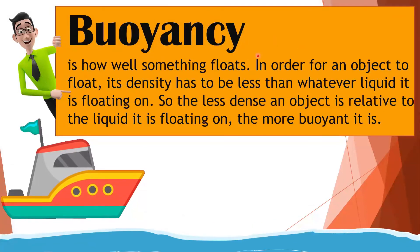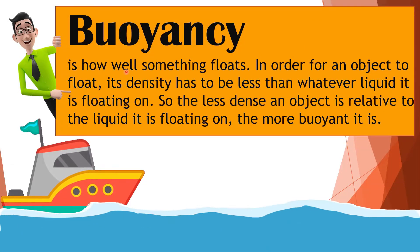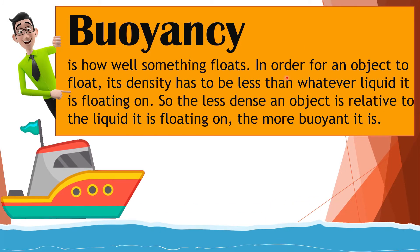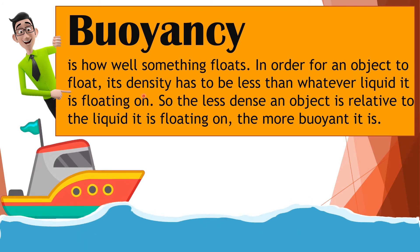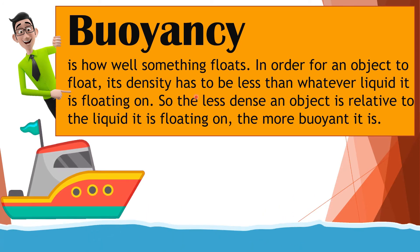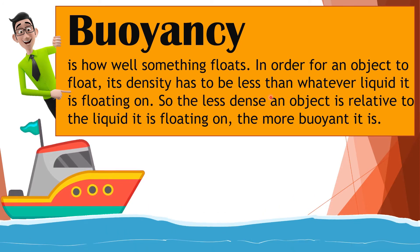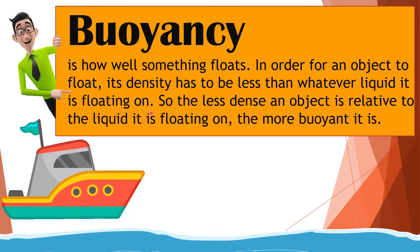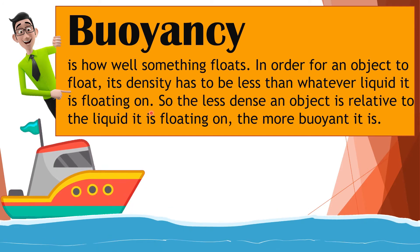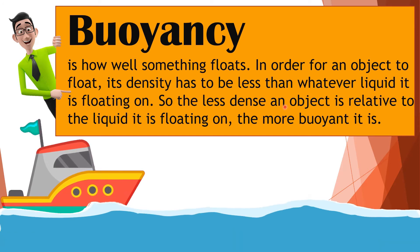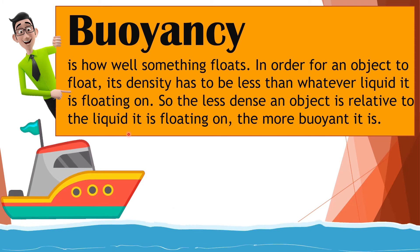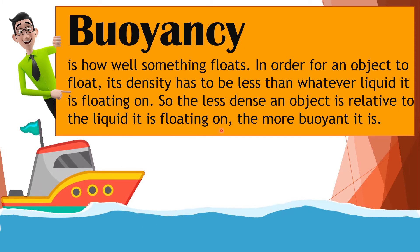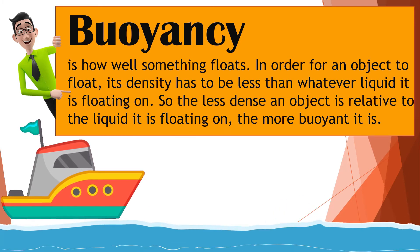Buoyancy is how well something floats. In order for an object to float, its density has to be less than whatever liquid it is floating on. So the less dense an object is relative to the liquid it is floating on, the more buoyant it is.